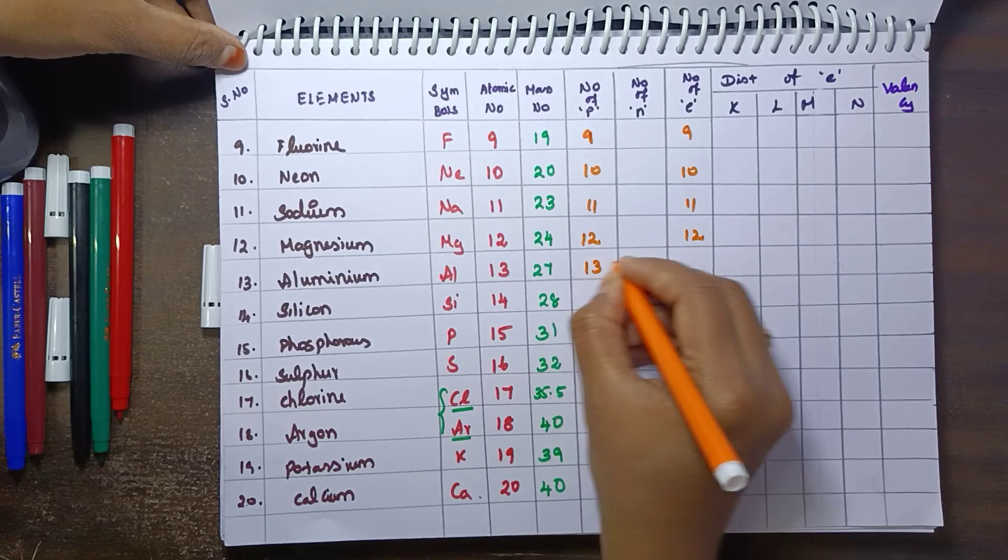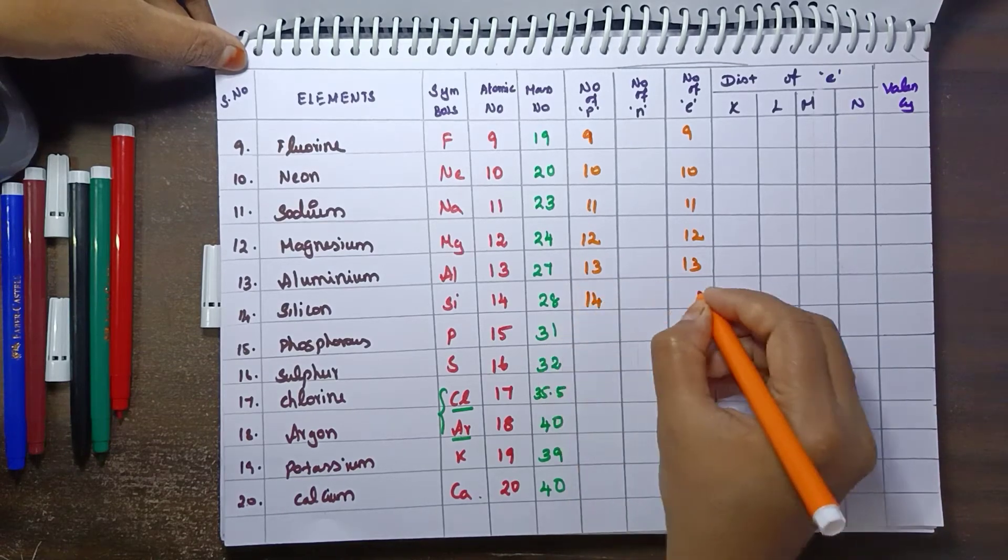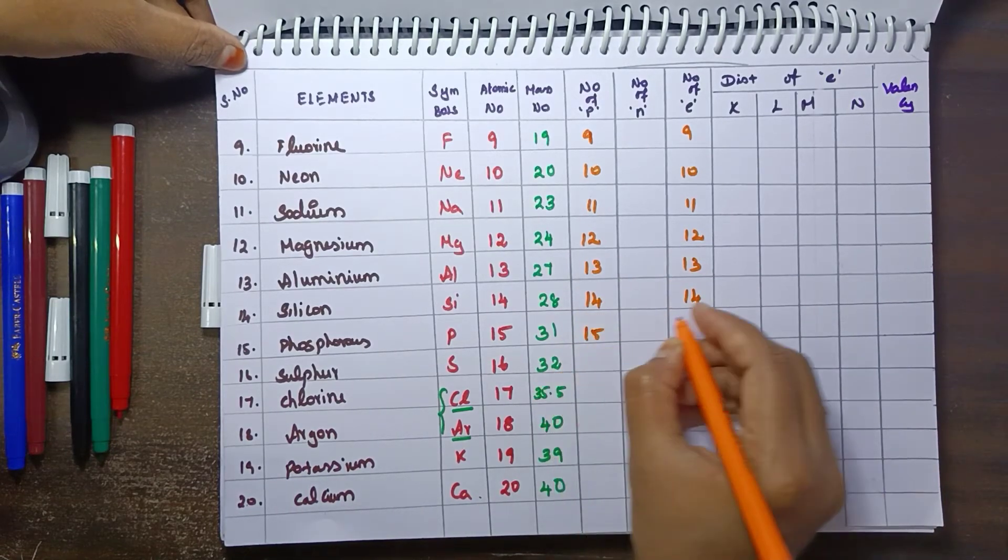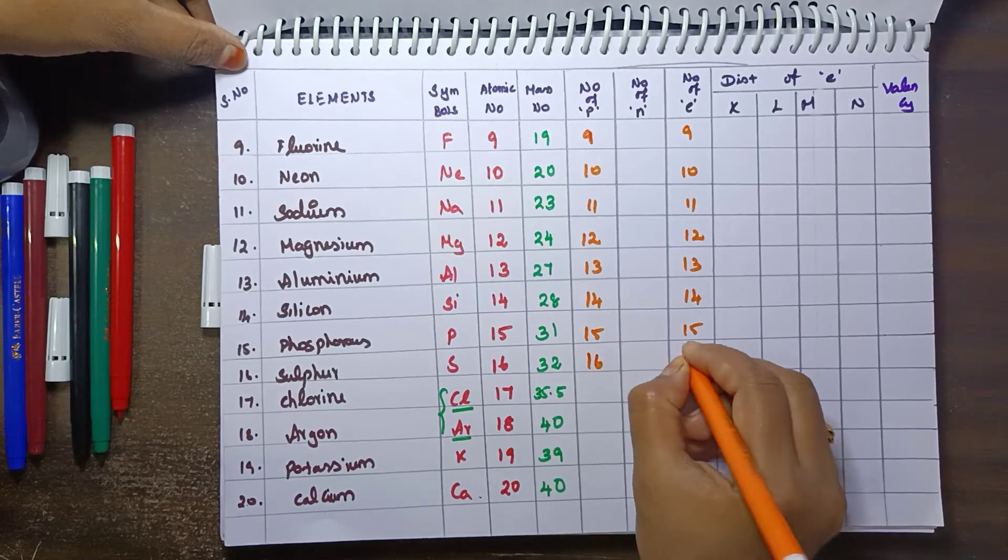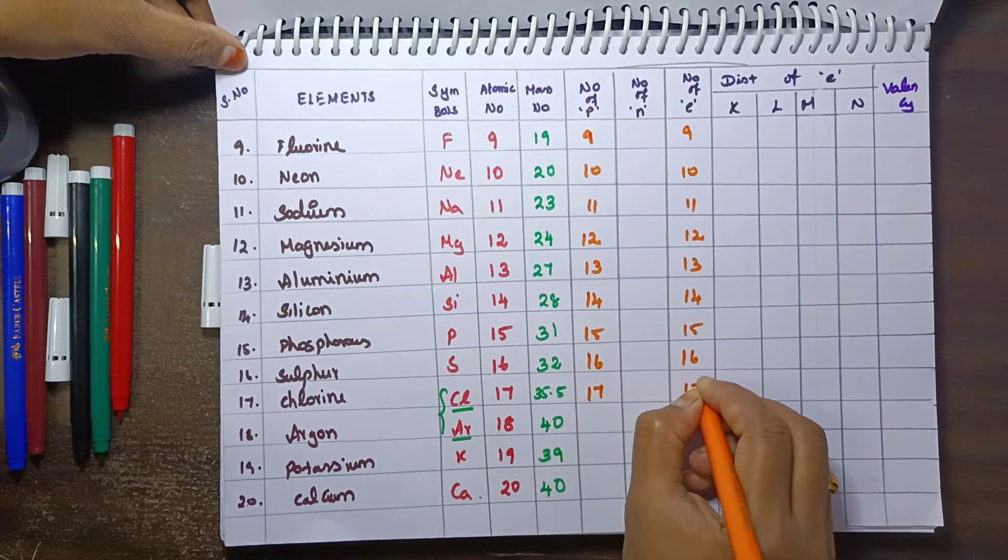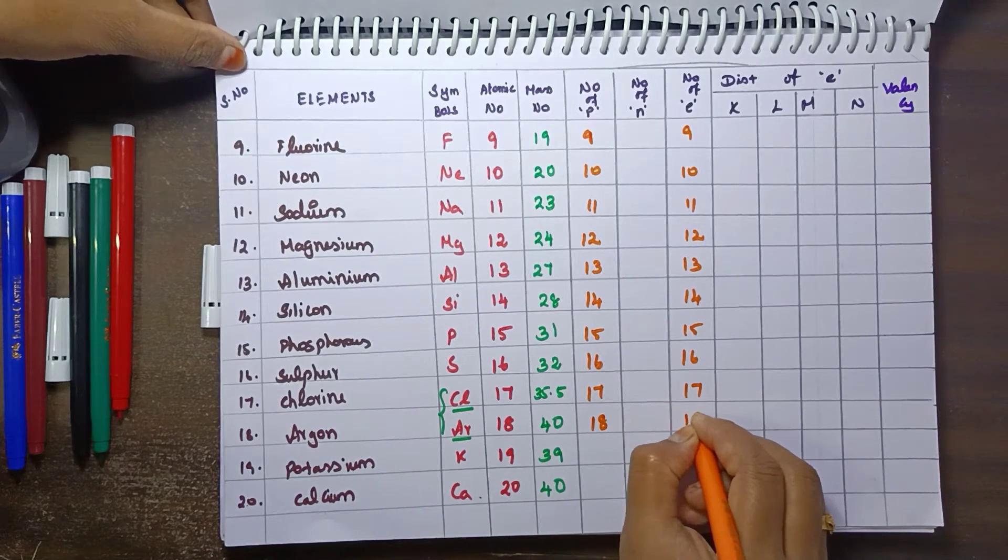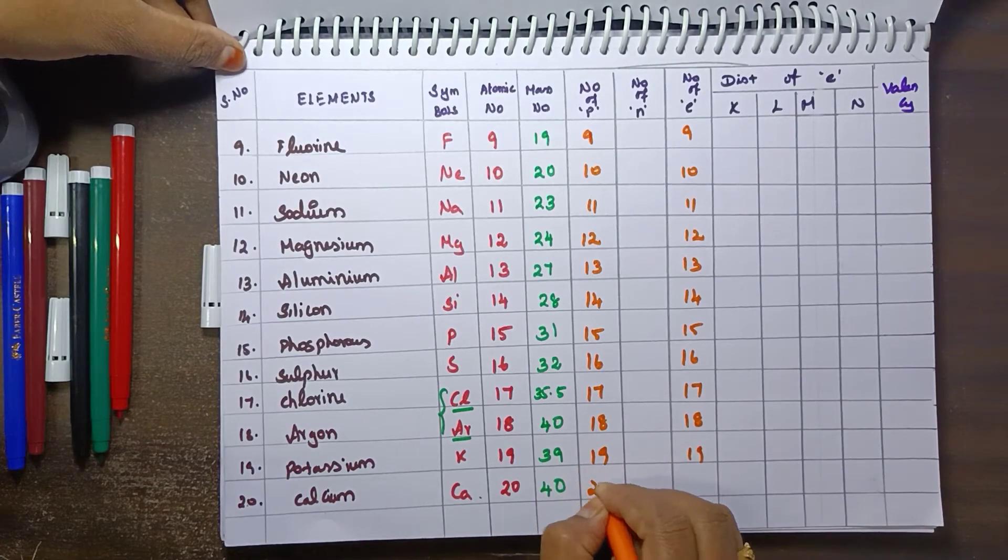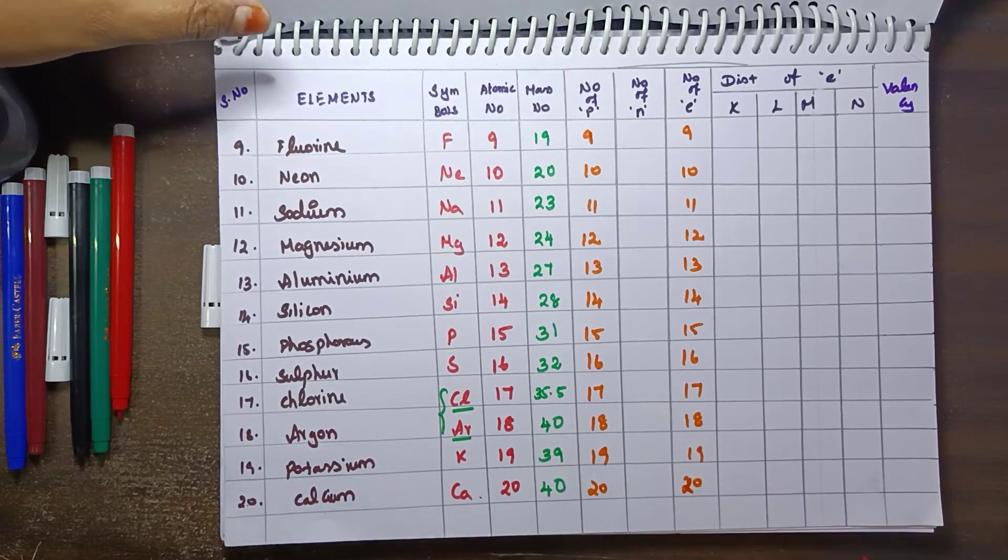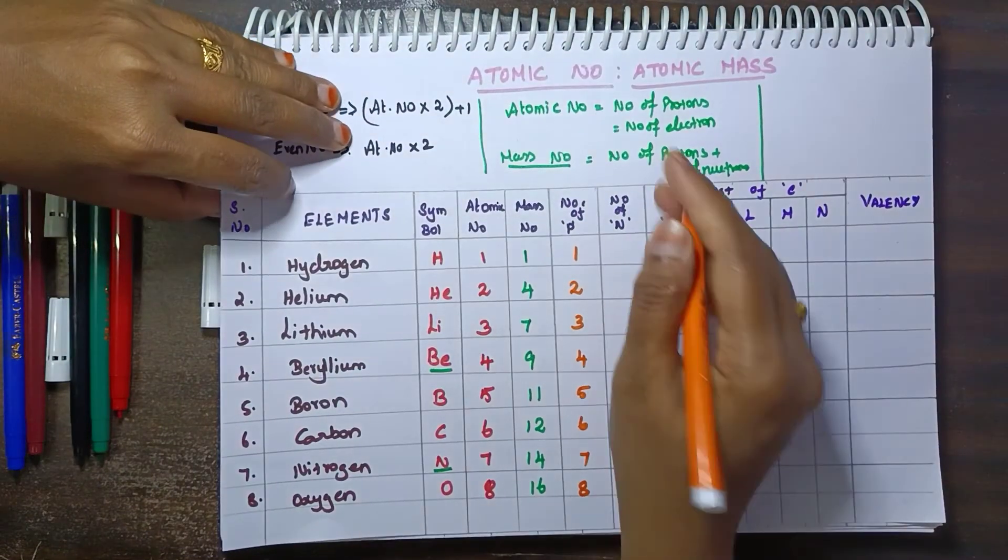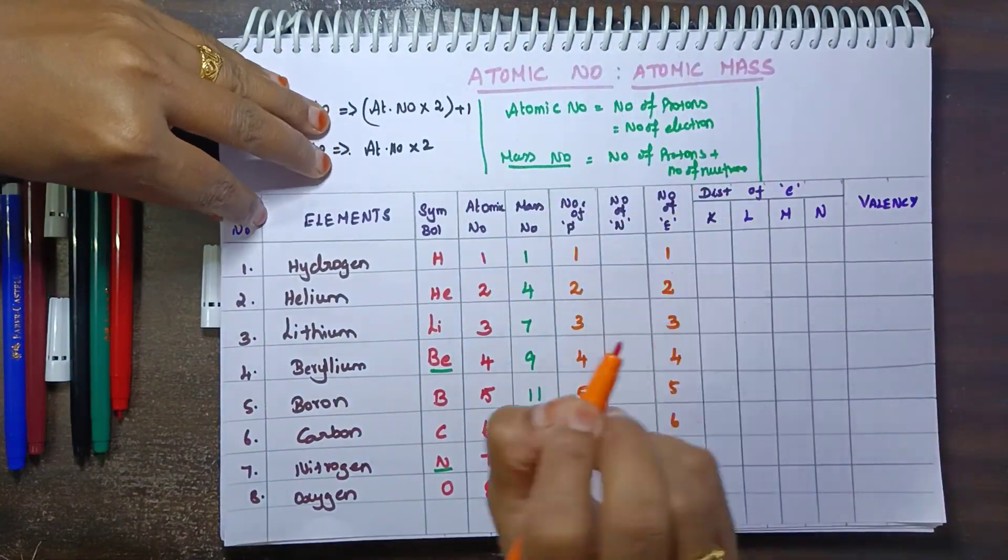13, 14, 15, 16, 17, 18, 19, 20. This is very easy. Atomic number, the number of protons, number of electrons are equal. Okay, next in neutrons.